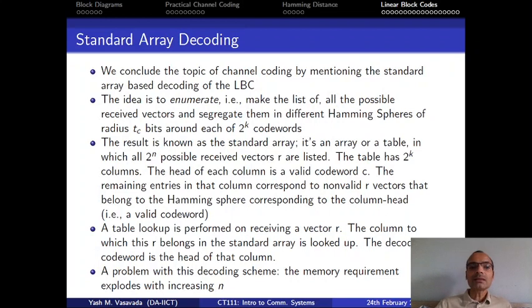Okay, and then the last thing for today is that there is a decoding scheme that we will not get too much into. But we are mentioning it here for the sake of completeness. And that is known as standard array method of decoding. And this standard array decoding can also be understood by means of this Hamming spheres and the decoding by minimum distance decoding. And the idea behind standard array decoding is to actually list out all the possible received vectors, 2 to the power n of them, 2 to the power n received vectors.